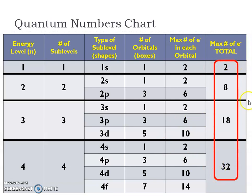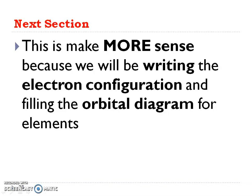You might want to watch this video one more time just to get an idea of those four quantum numbers. This should make more sense next section when we're going to be writing that electron configuration for the elements and what's called the orbital diagram. All right, see you in class.